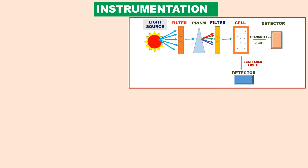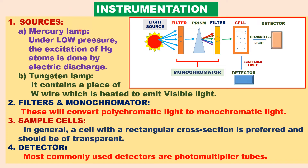The components present in the instrument for nephelometry and turbidimetry are as follows. The light source is very important; mercury lamps or tungsten lamps are used. Under low pressure, the mercury lamp excites mercury atoms by electric discharge to emit light. The tungsten lamp contains a piece of tungsten wire which is heated to emit visible light. Filters and prism convert light to monochromatic light. Sample cells with a rectangular cross-section are preferred and should be transparent. Photomultiplier tubes are mostly used as detectors for nephelometry and turbidimetry.